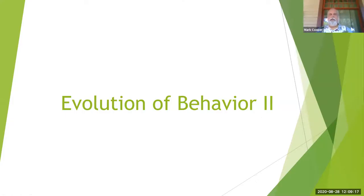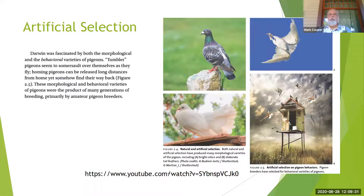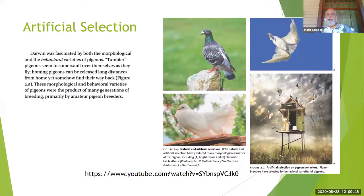This is the second of three videos on the evolution of behavior. We're going to look at two things: artificial selection and natural selection. We'll start with artificial selection. Charles Darwin was really interested in artificial selection.